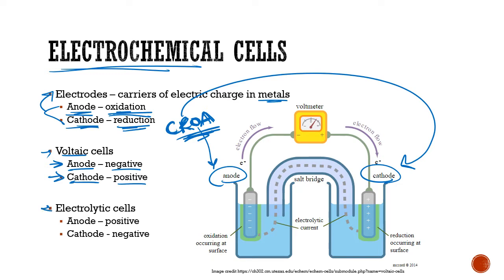Oddly, that gets flipped in electrolytic cells. The anode, where oxidation is occurring, is actually the positive electrode and the cathode is negative. We'll talk a little bit about why that is in a couple more slides.